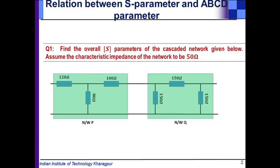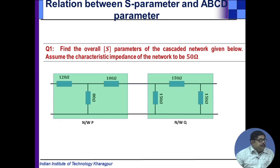The first problem: find the overall S-parameter of the cascaded network given below. There are two networks, one T network cascaded with a pi network, values are given, characteristic impedance is 50 ohm.